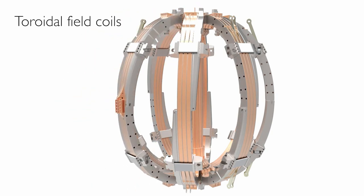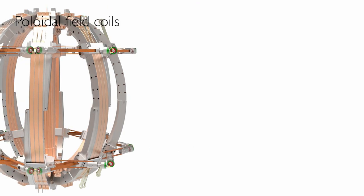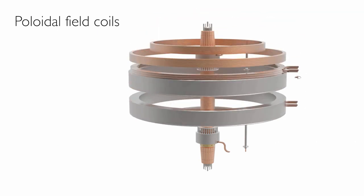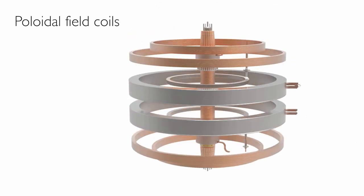The toroidal field coils and the poloidal field coils control and contain the plasma horizontally and vertically.